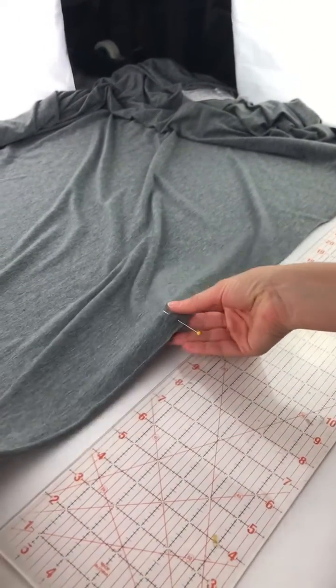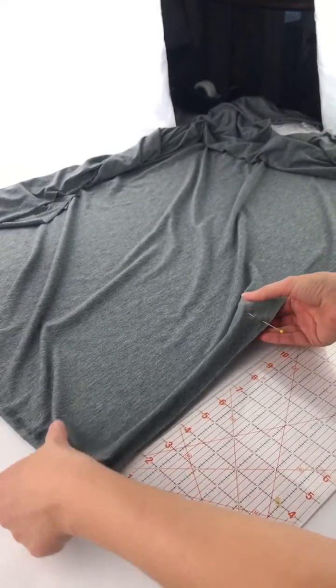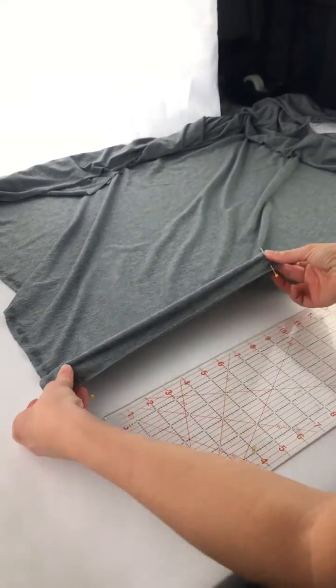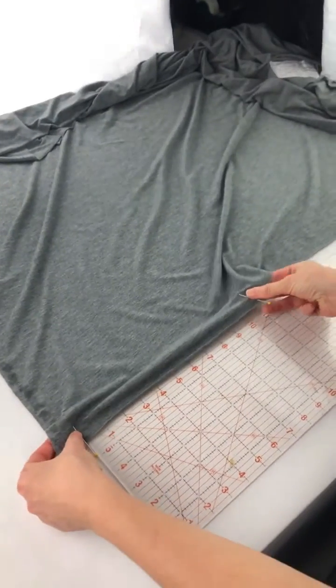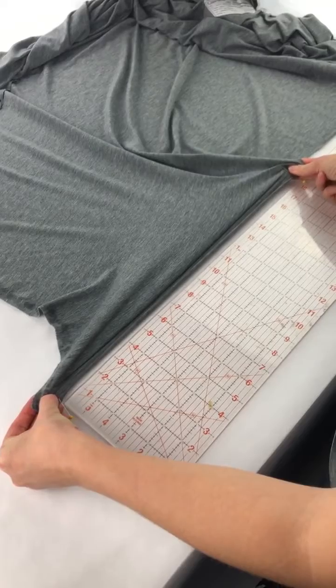Now I want to show you if you just take your thumbs and do it, it gives you an inaccurate result because really our body is stretching the fabric more like this instead of like this. Let's see what that result is. When we stretch it just with our thumbs, we can go all the way up to 18 with this fabric, so that is an inaccurate measurement.